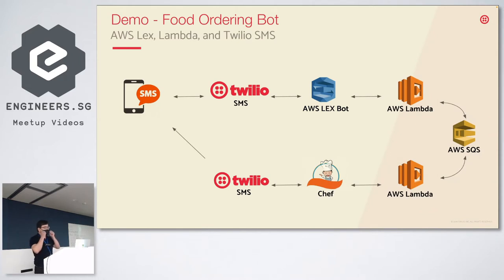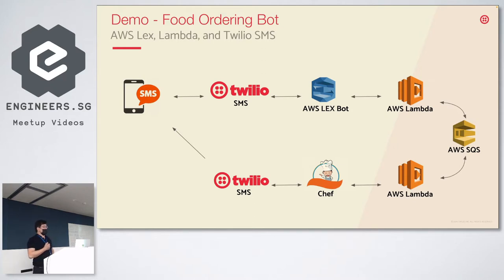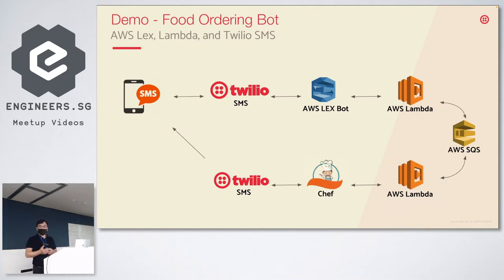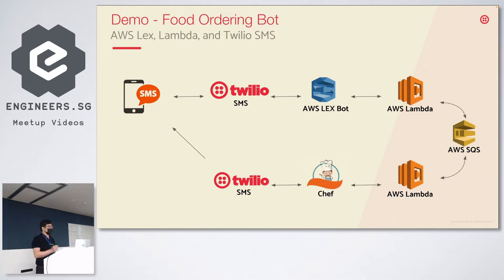Without further ado, let's look at the scenario. I'm going to use mobile phone SMS to chat with the AWS Lex chatbot. The chatbot processes the human natural language. After taking the responses from users, we want to process them — for example, I take the answer and put it into an order queue using AWS SQS message queue. Another Lambda function listening to the message queue will pick up the order and pass it to the chef. The chef prepares the order, marks it completed, and the Lambda function sends an SMS to inform the customer that their order is ready for pickup.